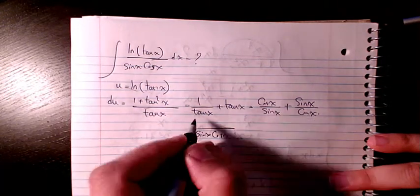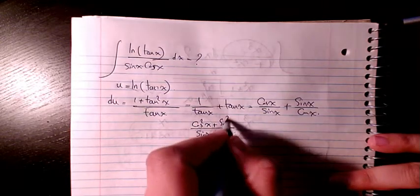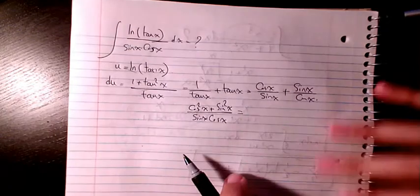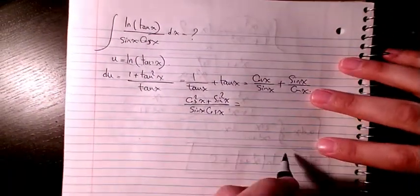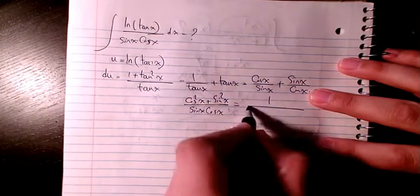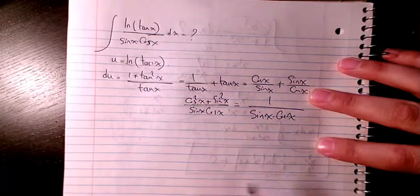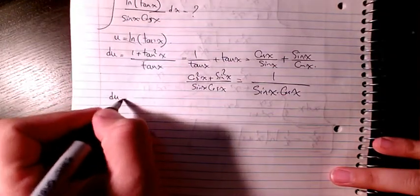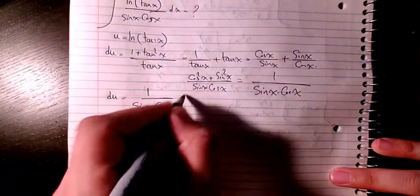The common denominator is going to be cosine times cosine plus sine times sine, which is cosine squared plus sine squared divided by sine x times cosine x. You know cosine squared plus sine squared is 1, and the denominator is going to be sine x times cosine x. So du will be 1 over sine x cosine x dx.